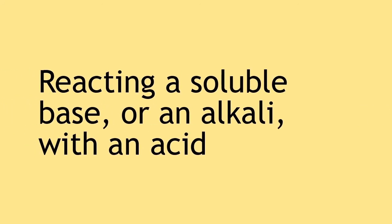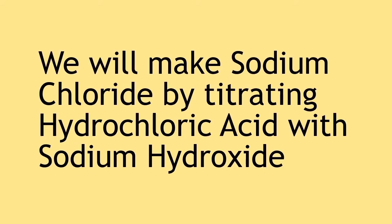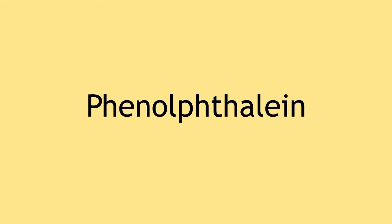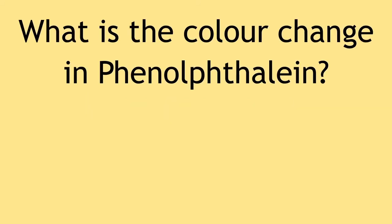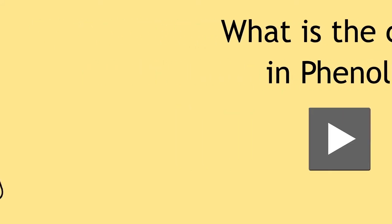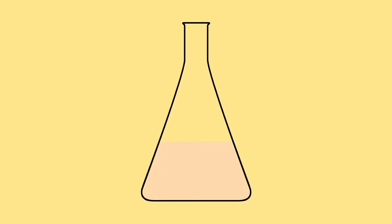We can also make soluble salts by reacting a soluble base or an alkali with an acid. We will make sodium chloride by titrating hydrochloric acid with sodium hydroxide. Remember to add phenolphthalein so we know the endpoint of the titration. Phenolphthalein goes from colorless to light pink at the endpoint. However, we don't want pink crystals so we must make note of the amount of sodium hydroxide used in the initial titration and repeat the titration without phenolphthalein.